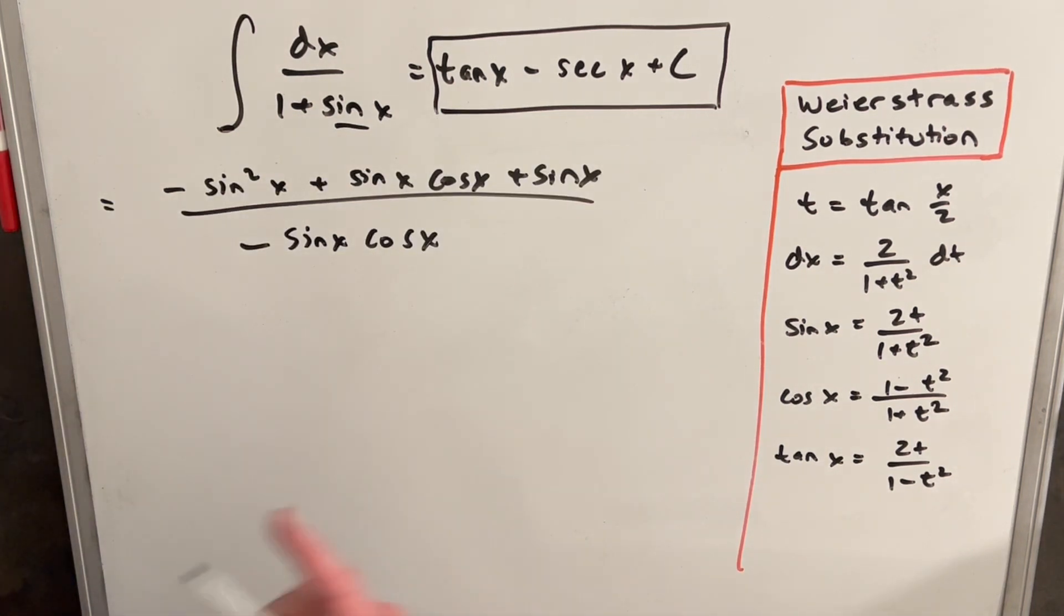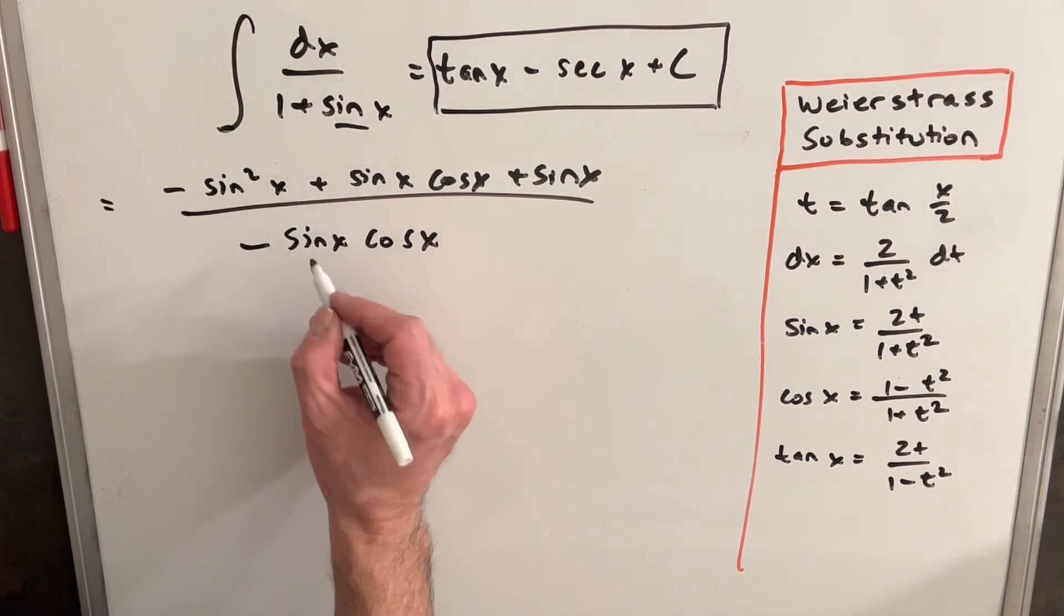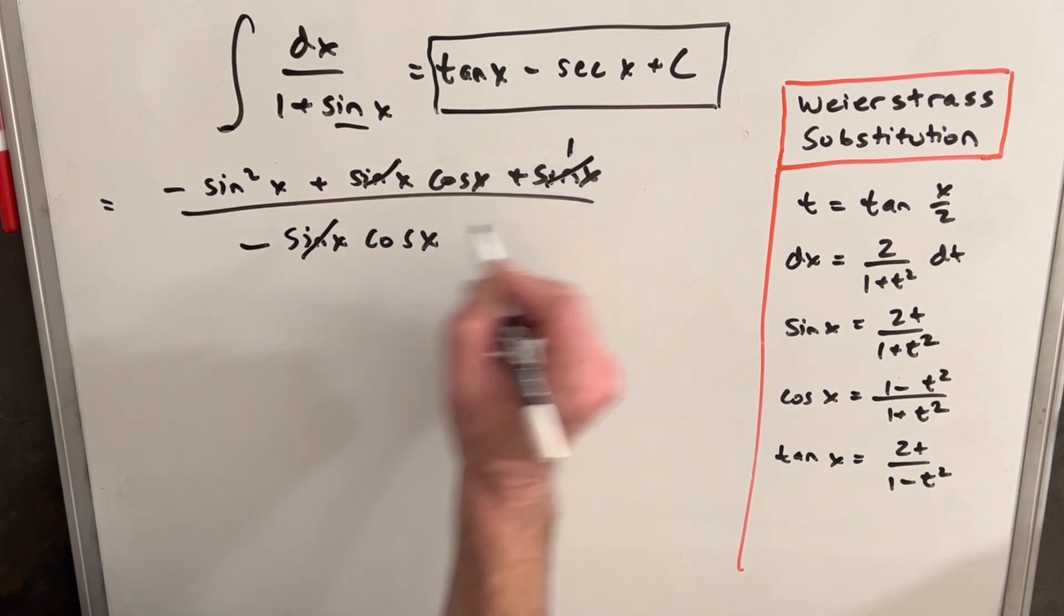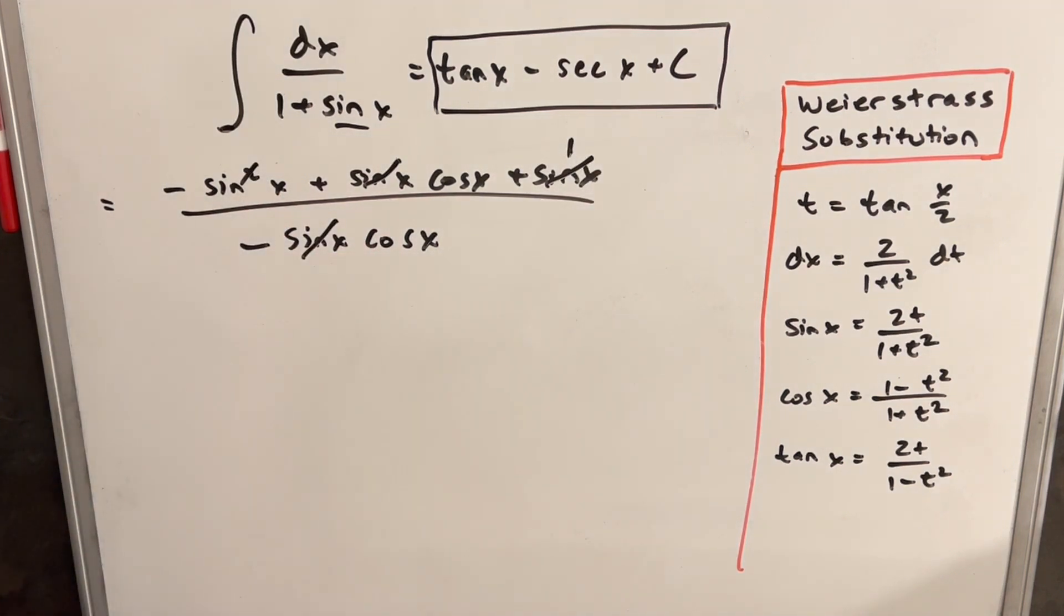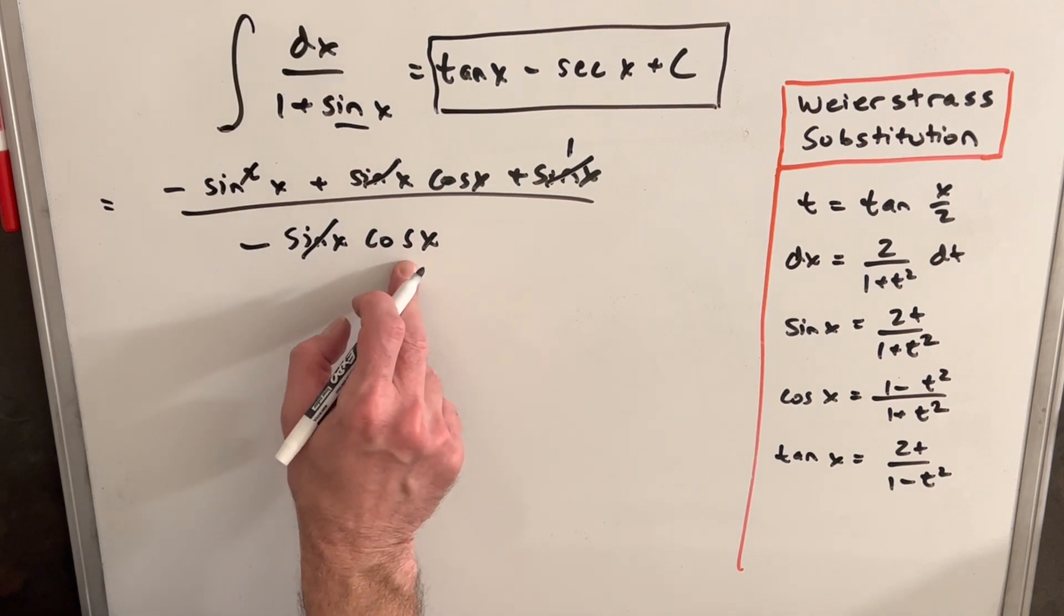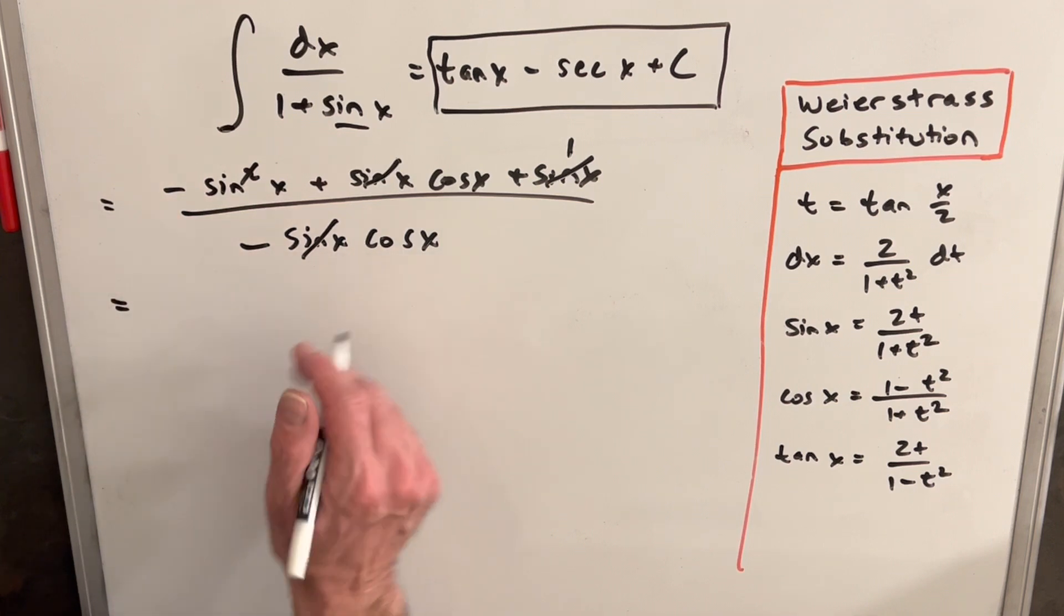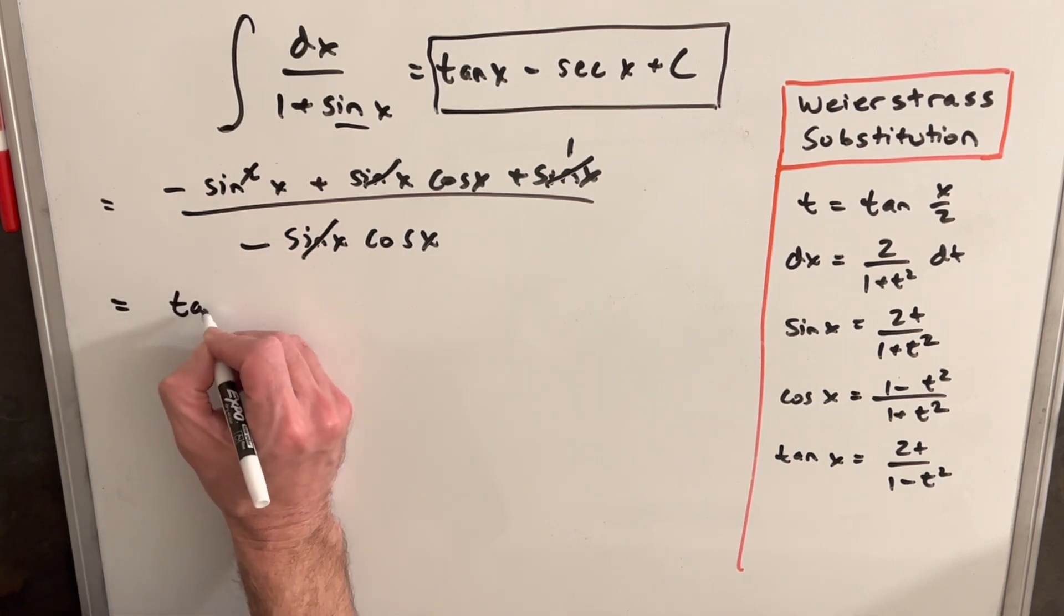Then all these terms have twos, we can get rid of all these twos. Then I probably should have noticed in the last step that we actually have a sine in every term. So we cancel all these sines, it's going to be a one here. And then I think now we just have one term in the denominator, so we can actually just divide each term. So minus sine x over minus cos x, this is just going to be tan x.